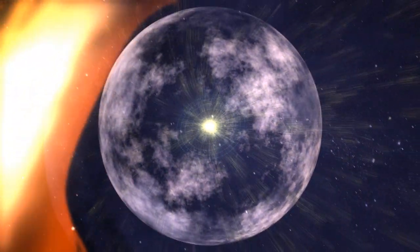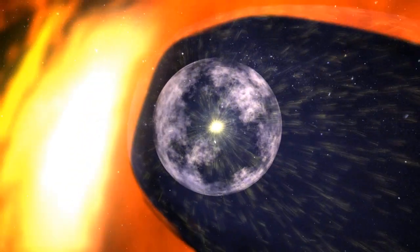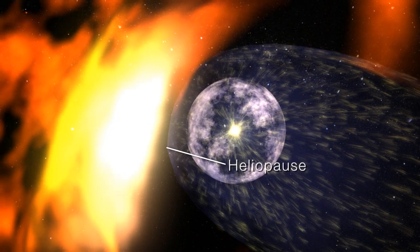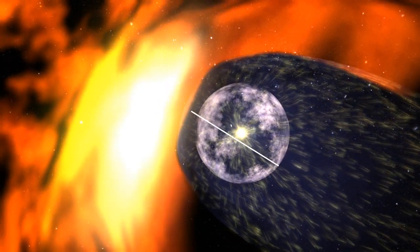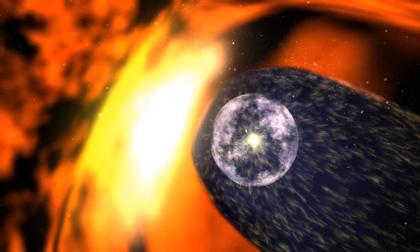The region begins with the termination shock, where the solar wind abruptly slows down. It ends with the heliopause, the boundary between the solar wind and interstellar space. Between the two is the heliosheath, a teardrop-shaped region sculpted by the pressure of the interstellar medium.